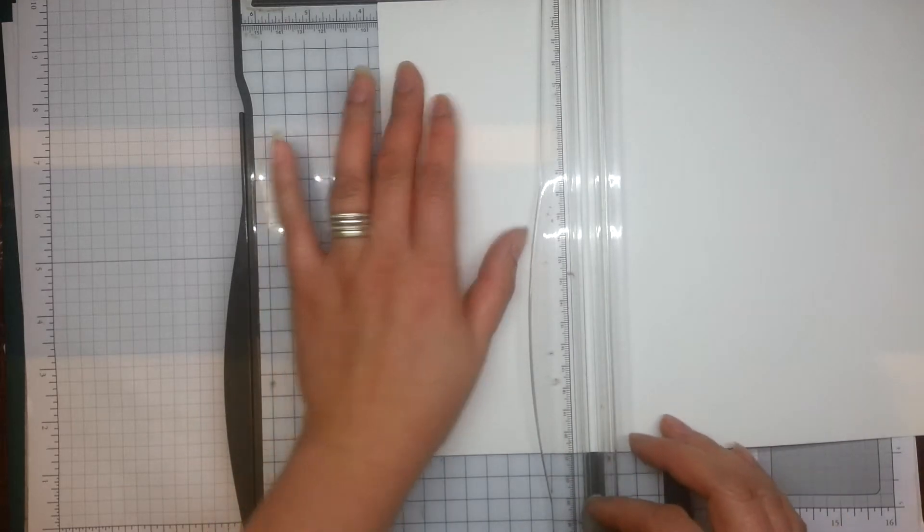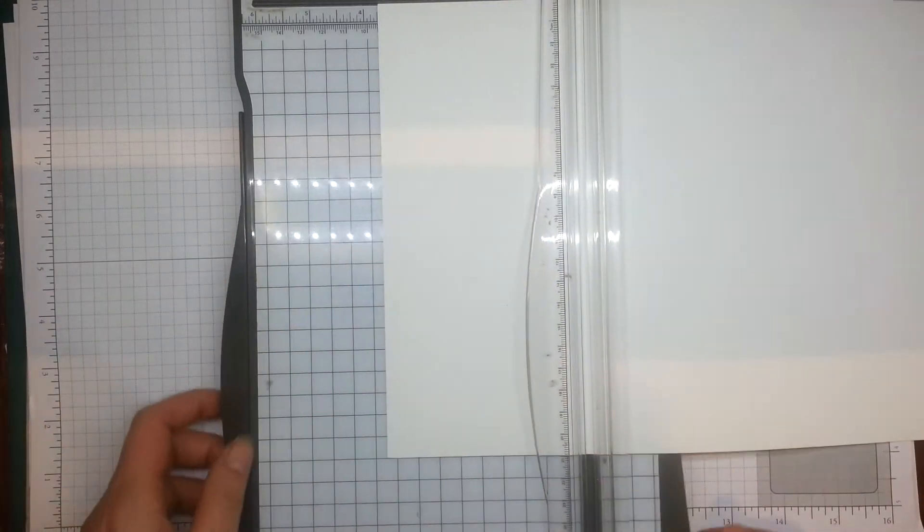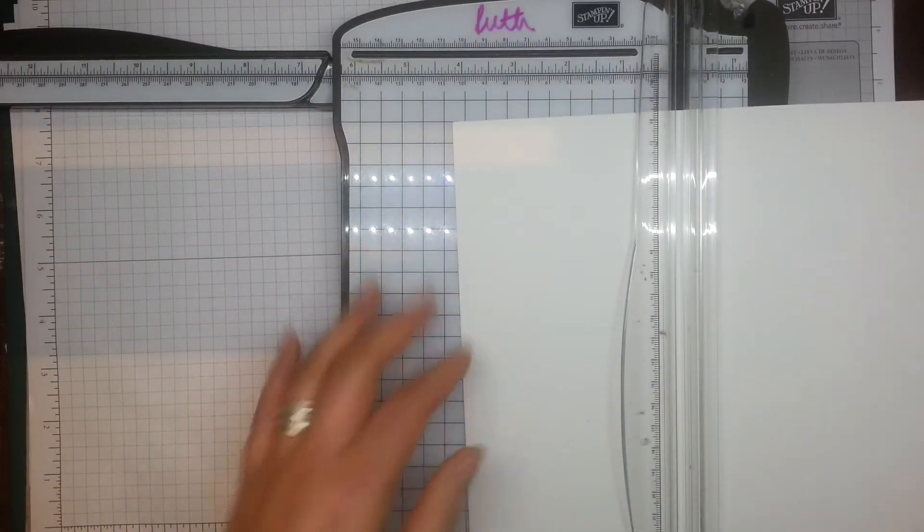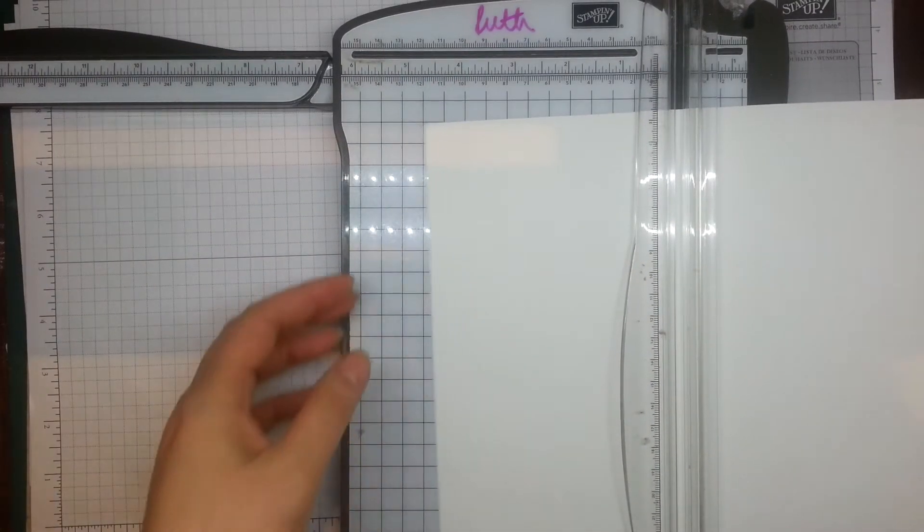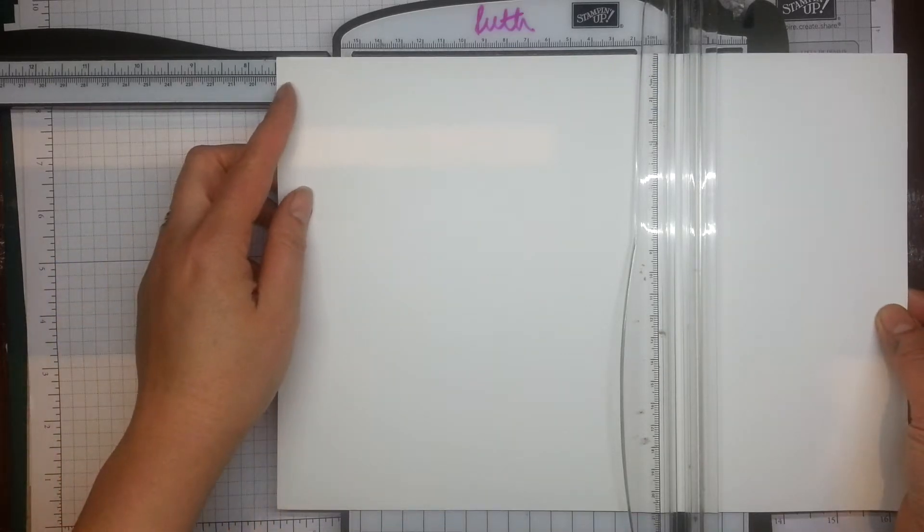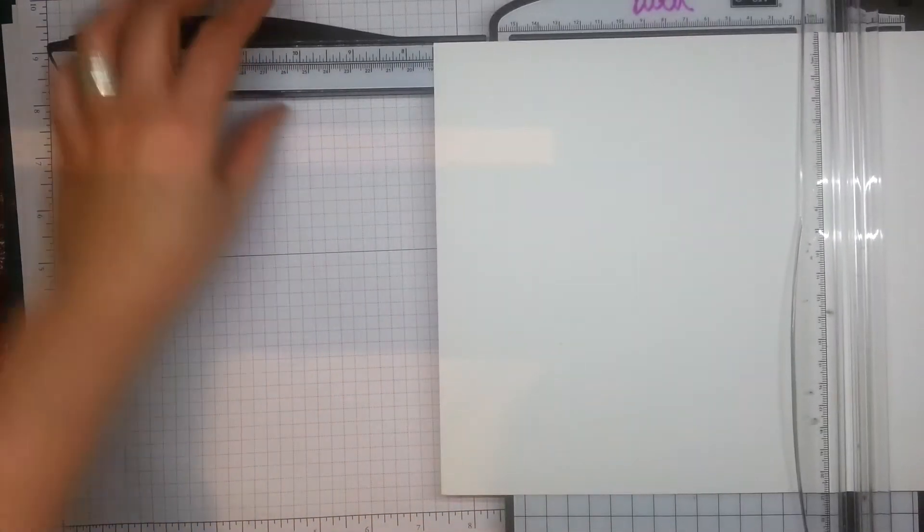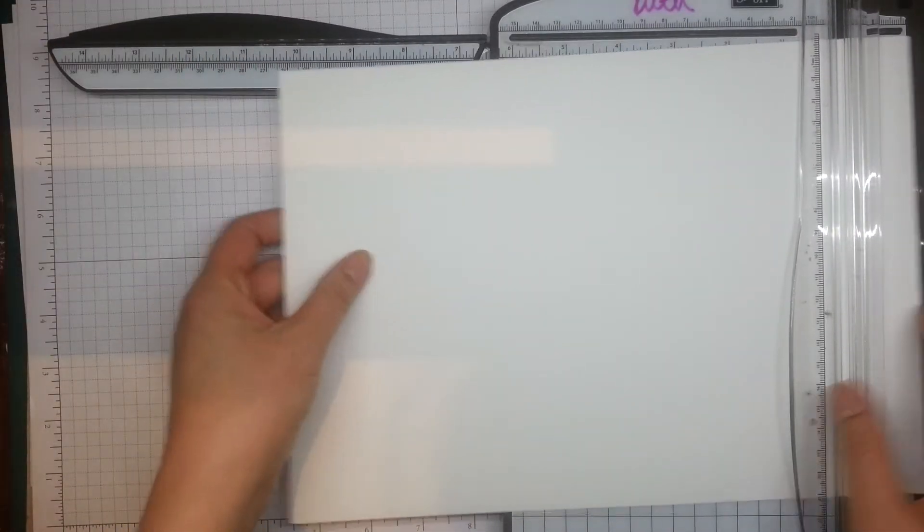I'm just going to score my A4 sheet of cardstock at 9.5cm, or if you're doing this in inches, that's about 3 3⁄4 inches. And then at 19.